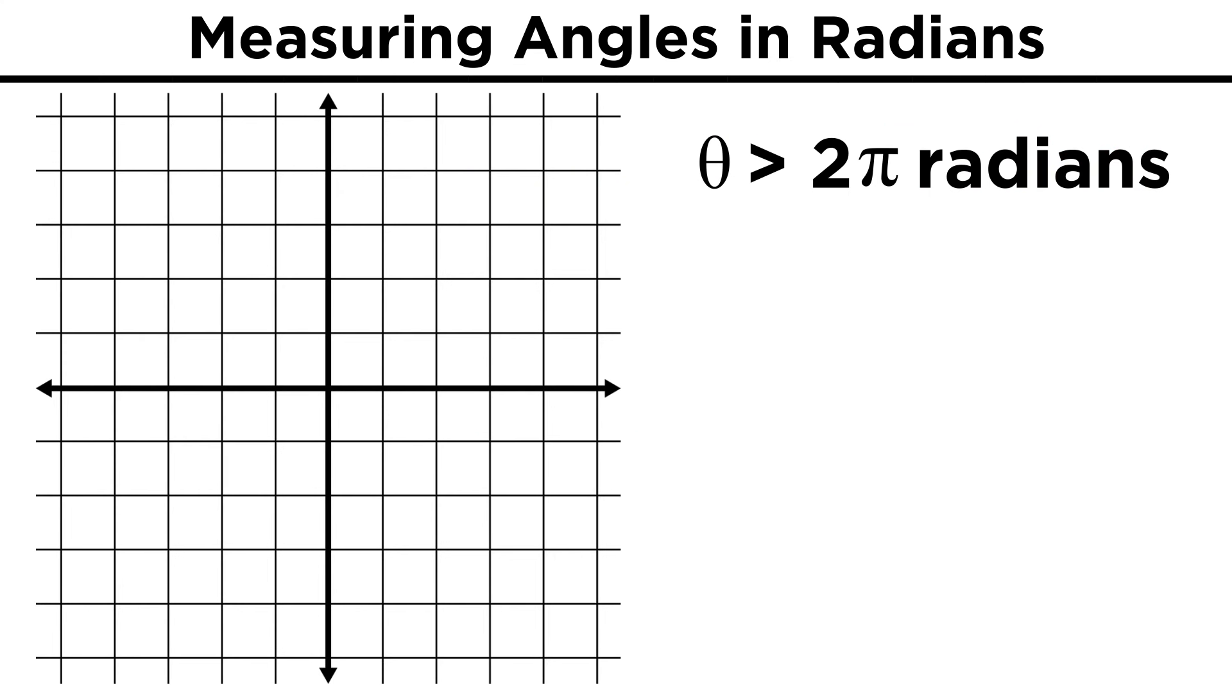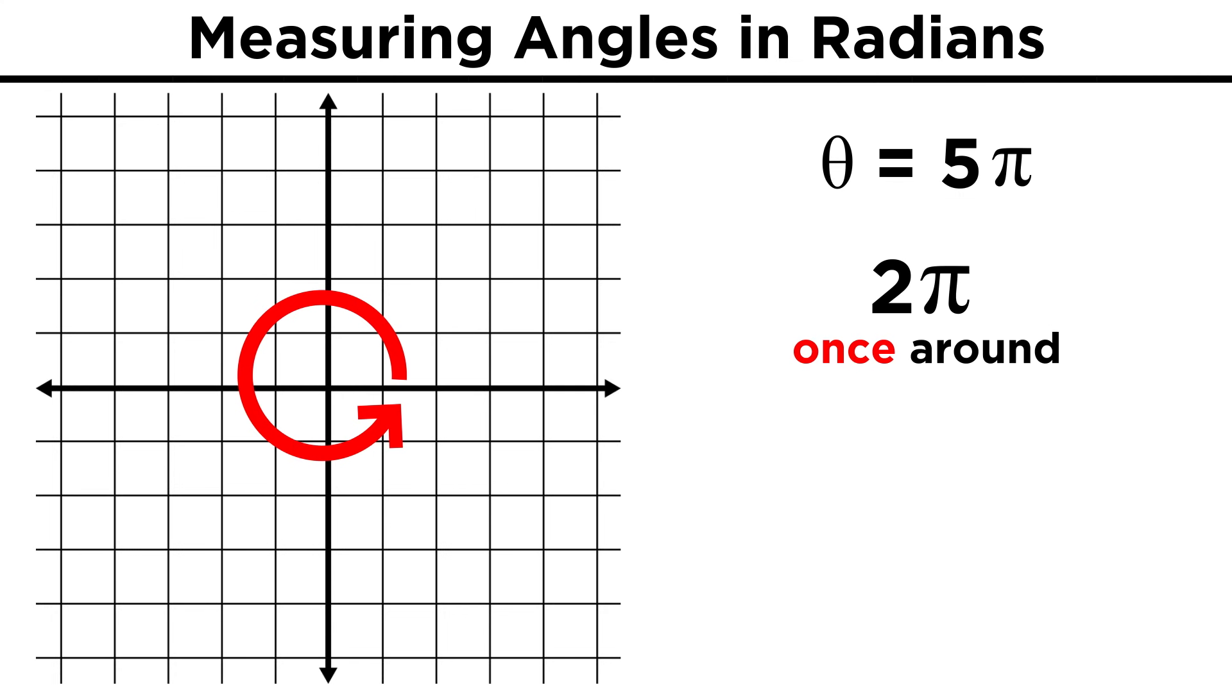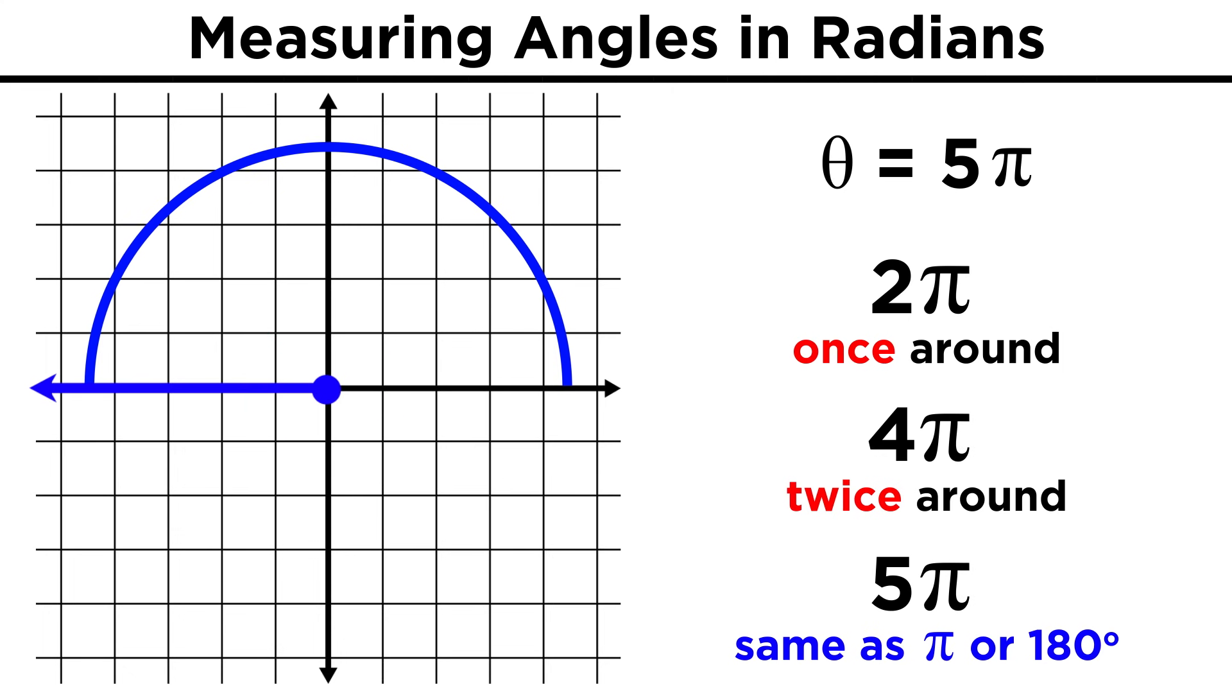We can also describe angles greater than 2π radians, or simply 2π, as we will often take the word radian to be implied. Say we have 5π. Well 2π means we go around once, another 2π takes us around again, and then one more π puts us here.